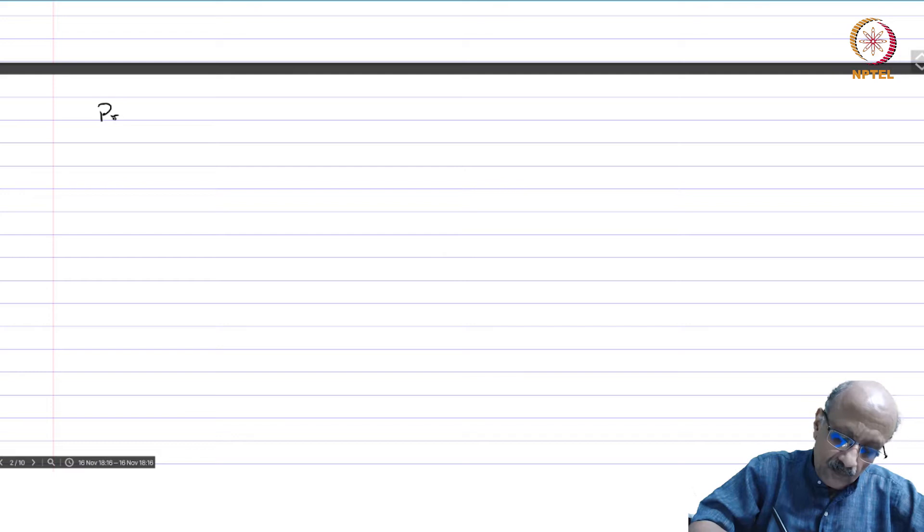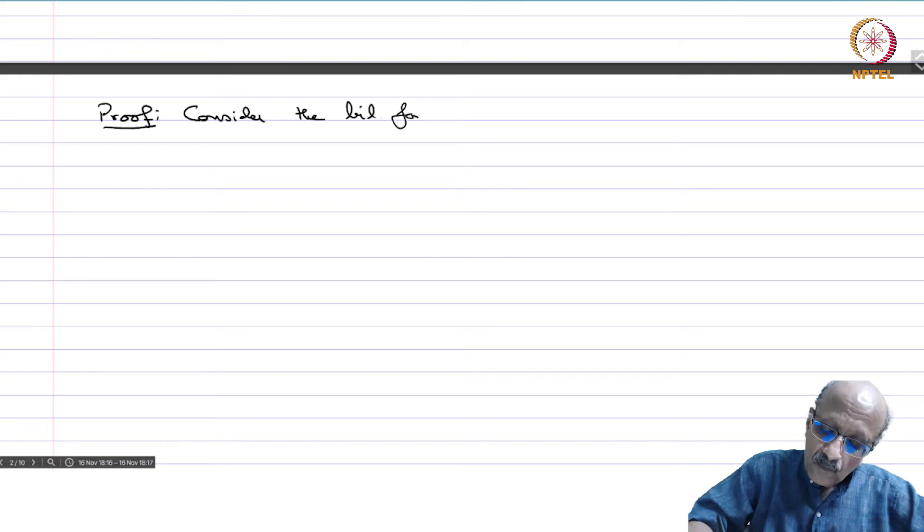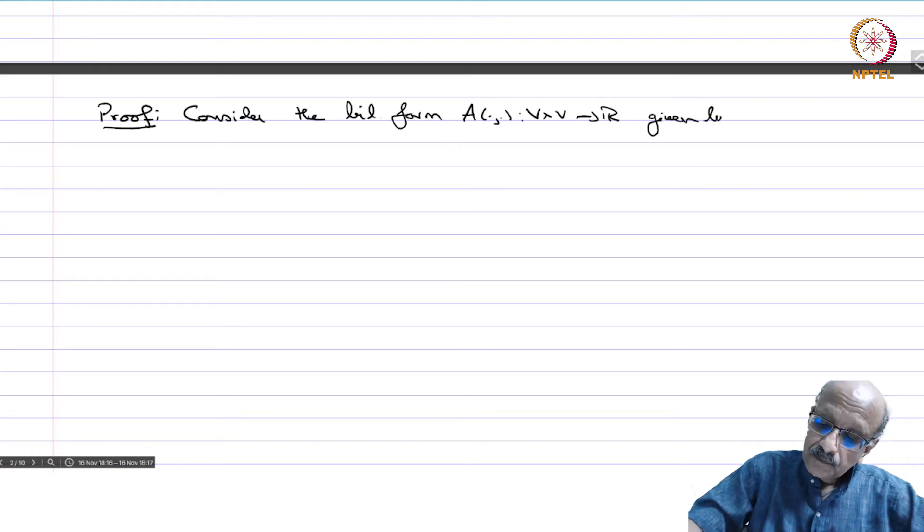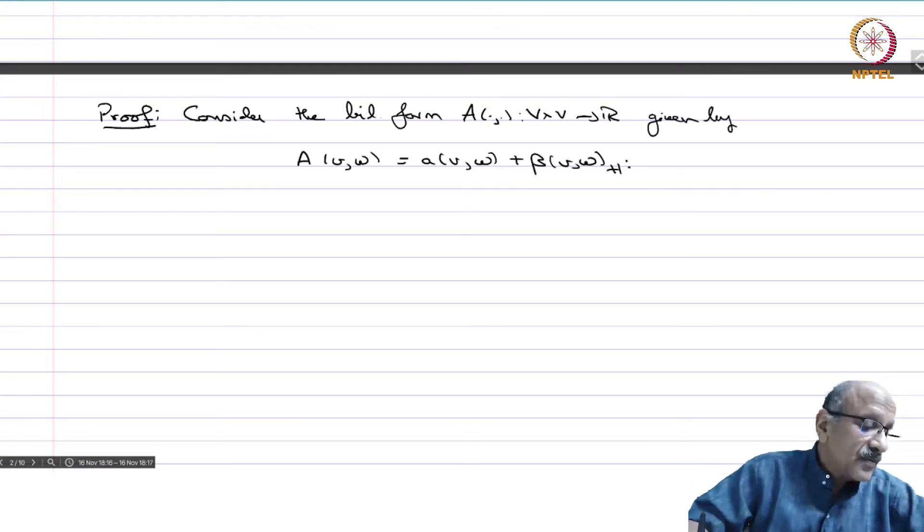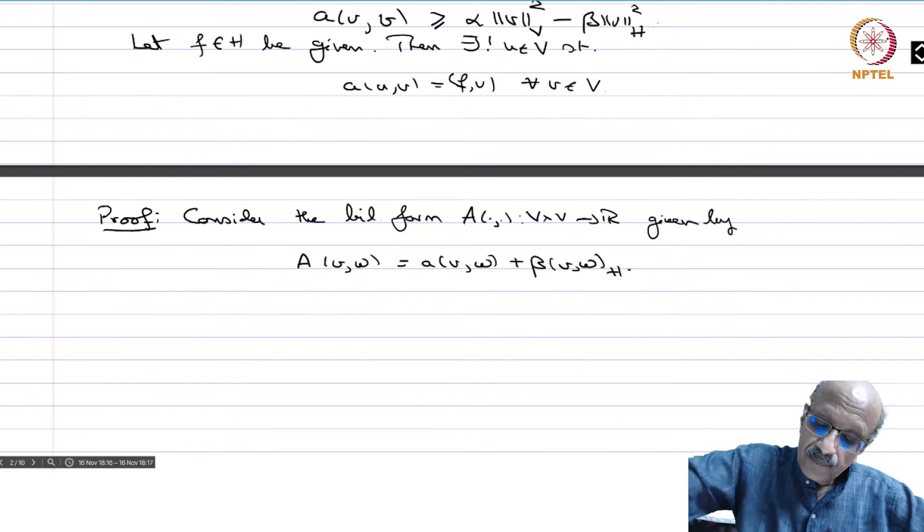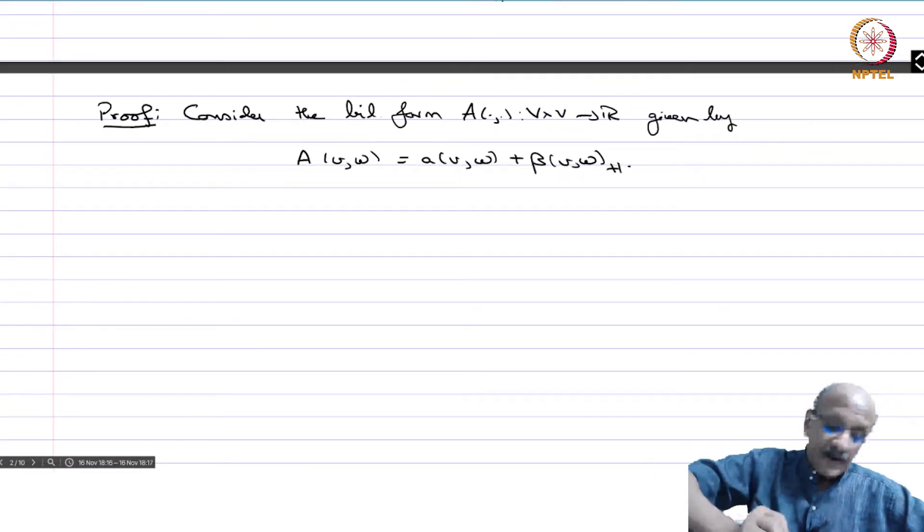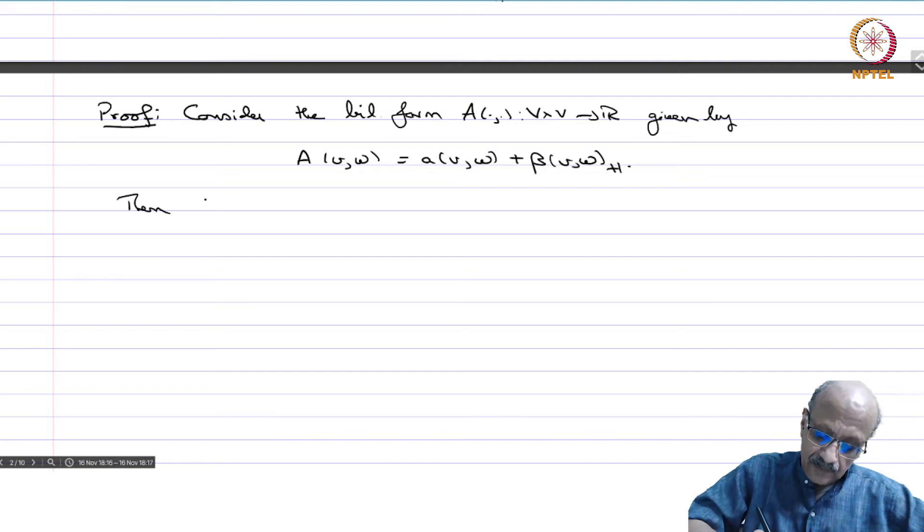Proof: Consider the bilinear form capital A from V × V into ℝ given by A(v,w) = A(v,w) + β(v,w)_H, where this inner product is taken in H. F(v) is obviously in H because F is given in H.